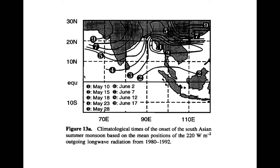Typical onset dates of the summer monsoon are illustrated here. Generally speaking, the onset date is earliest near the equator, and a broad but not contiguous area of precipitation progresses northward across India. First onset of the monsoon over most of India is climatologically in early to late June. Monsoon onset starts early over topographic features in Southeast Asia and progresses toward the northeast into China later into the summer.